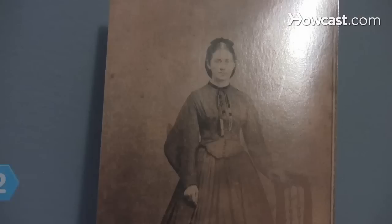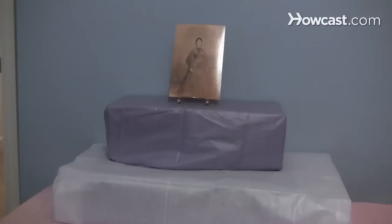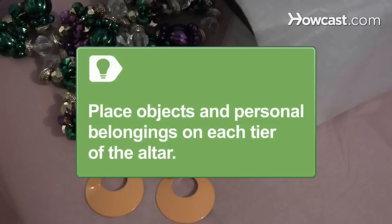Step 2. Place a photograph of the person to whom the altar is dedicated on the top tier of the altar, along with pictures of saints that are important to the family. Place objects that represent things that the deceased liked in life, as well as personal belongings on each tier of the altar.